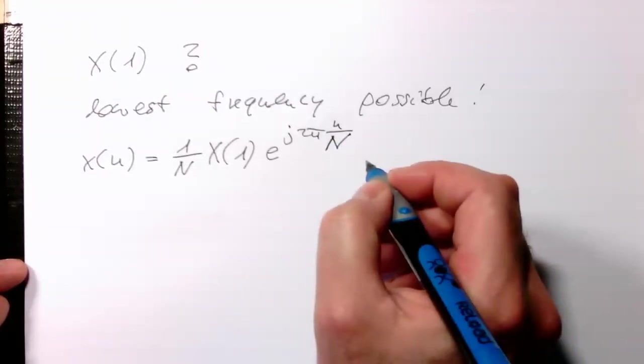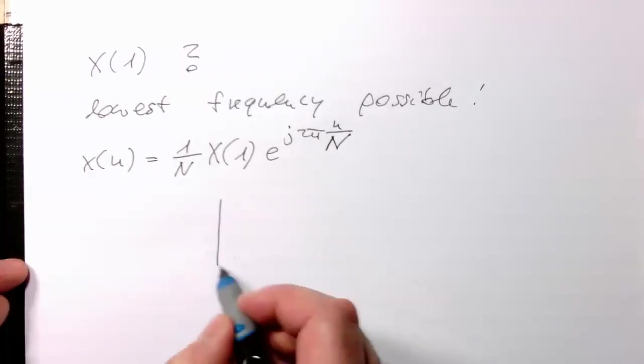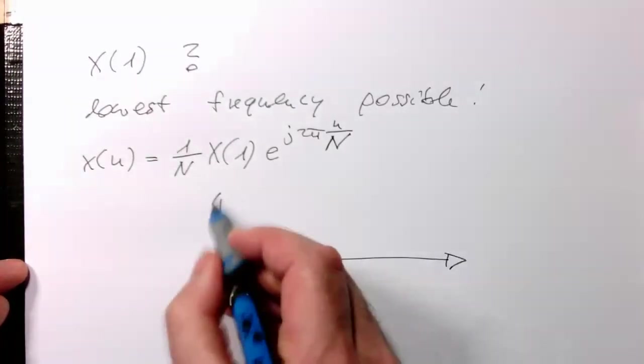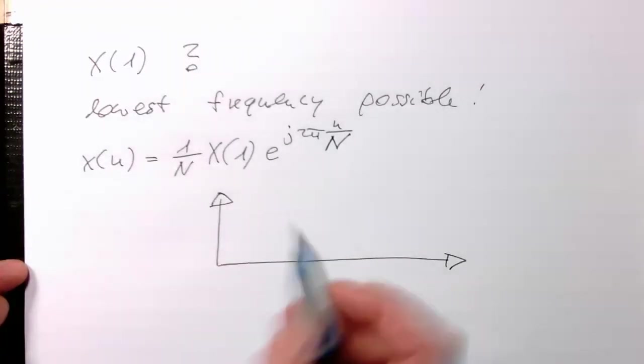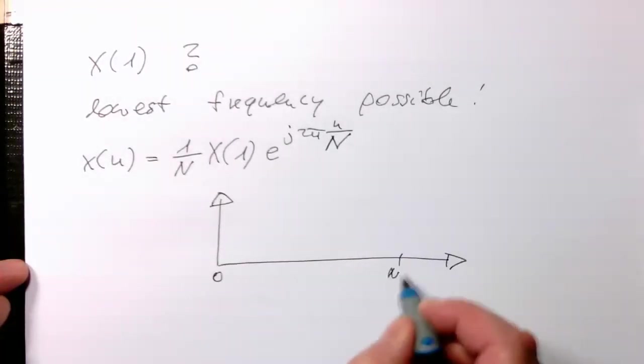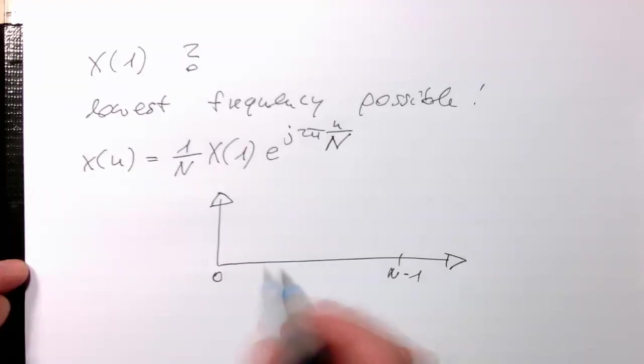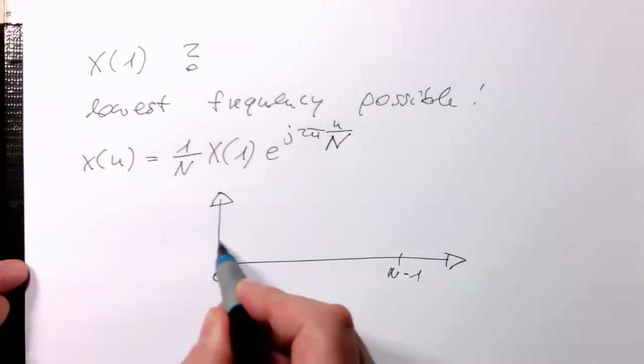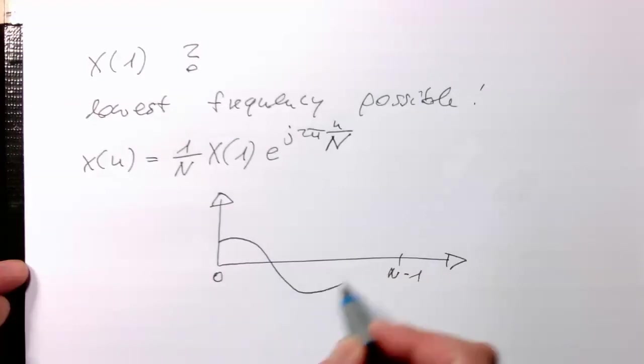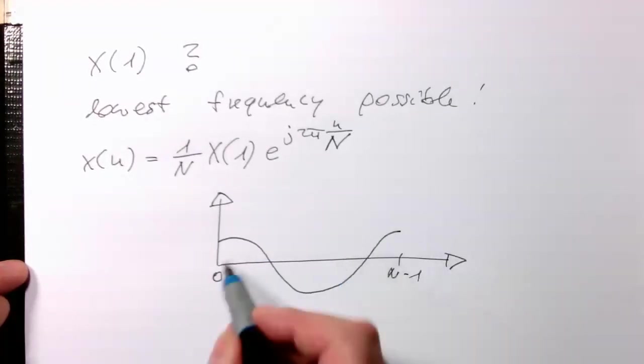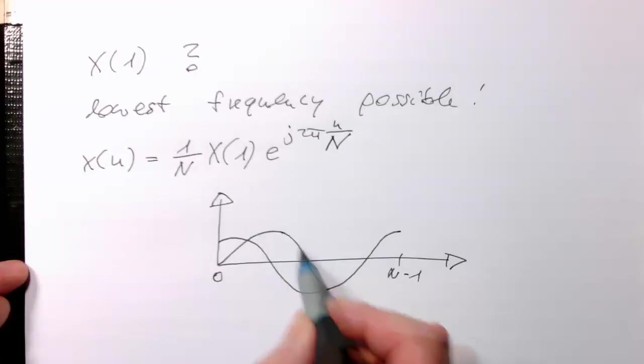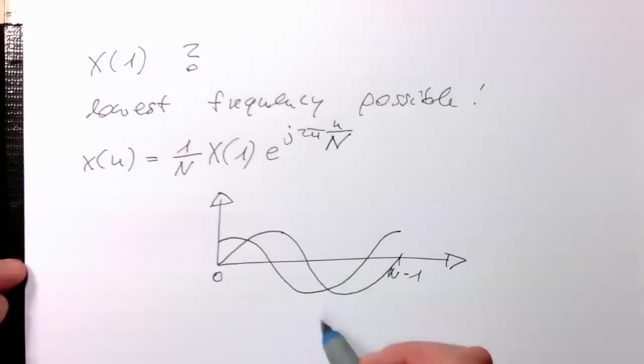This gives us the following result, that if this goes to n minus 1, then depending on this coefficient here, if it is real or complex, we are either getting something like that or we are getting a curve like this, which fits exactly in here. This is directly obvious here.